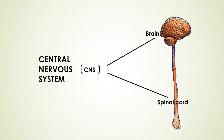After understanding the structure of a typical neuron, its types, and that it is the basic unit of the nervous system, let's try to understand what the central nervous system is. The central nervous system or CNS has two parts: brain and spinal cord. Both of these act as coordinators and are made up of hundreds of relay neurons. Let's study them one by one.